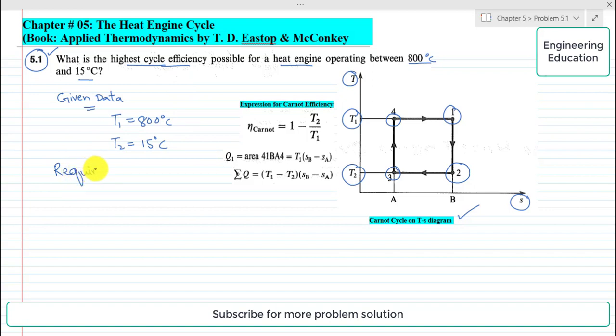So we are required to find the highest cycle efficiency and that is nothing but the Carnot cycle efficiency. So we have to find the Carnot cycle efficiency. It's very simple. The derivation for the expression of Carnot cycle has been derived in the text. Carnot cycle efficiency is equal to 1 minus T2 by T1.